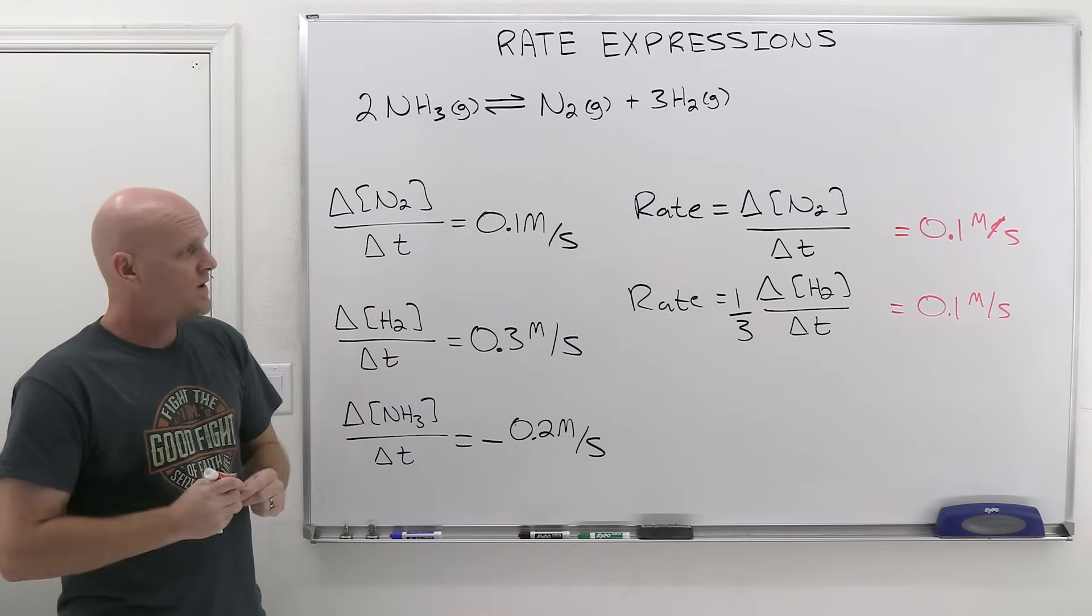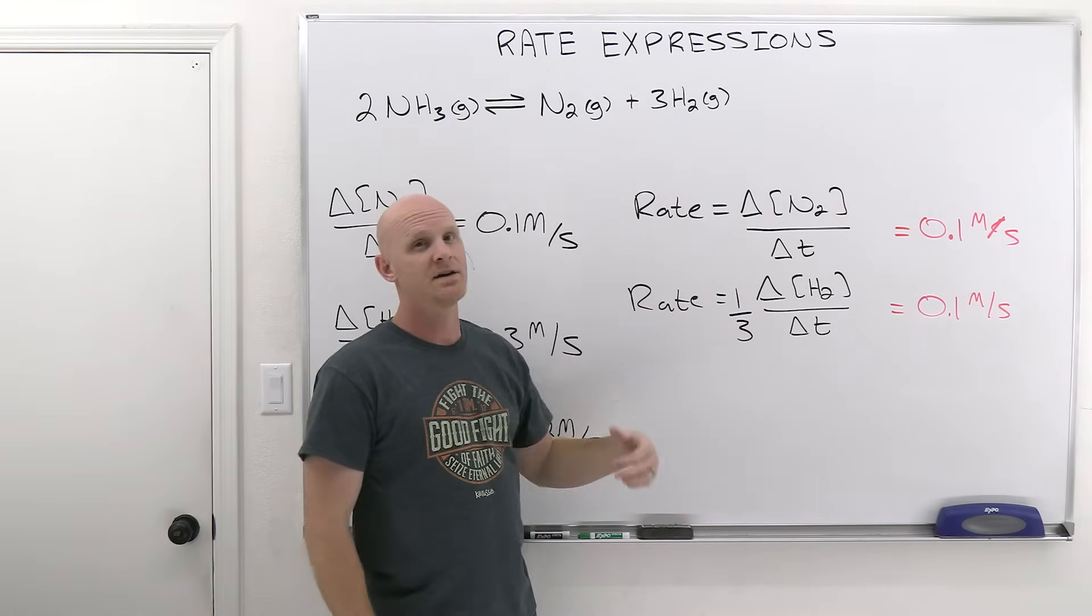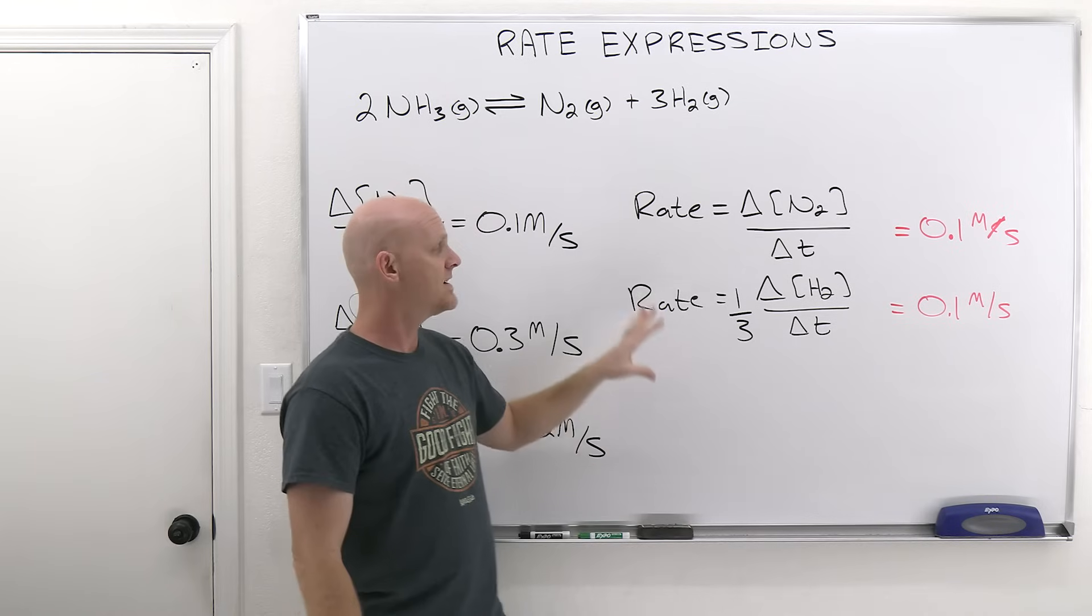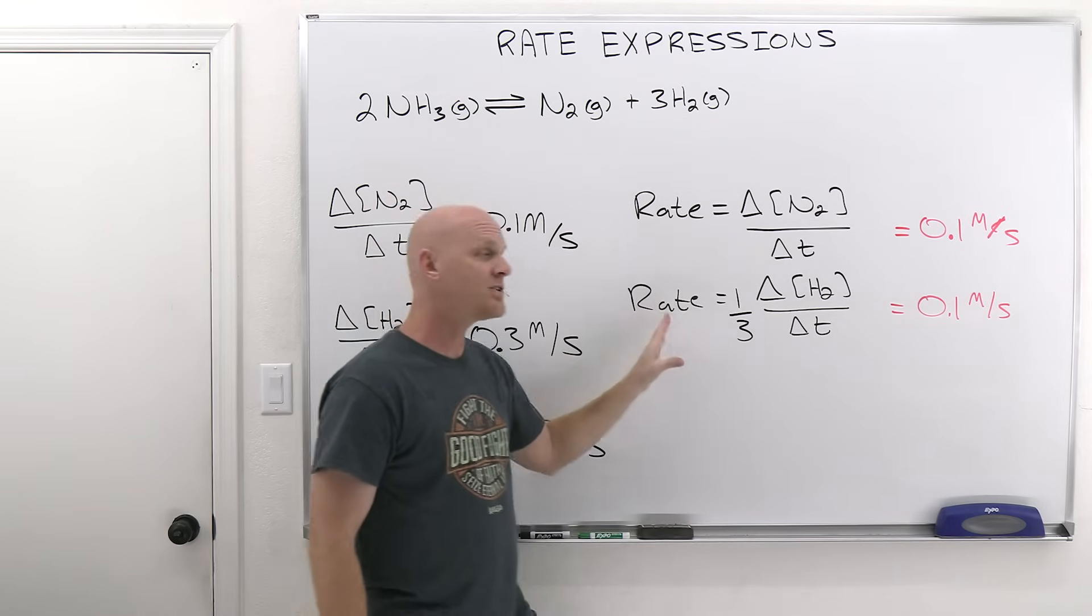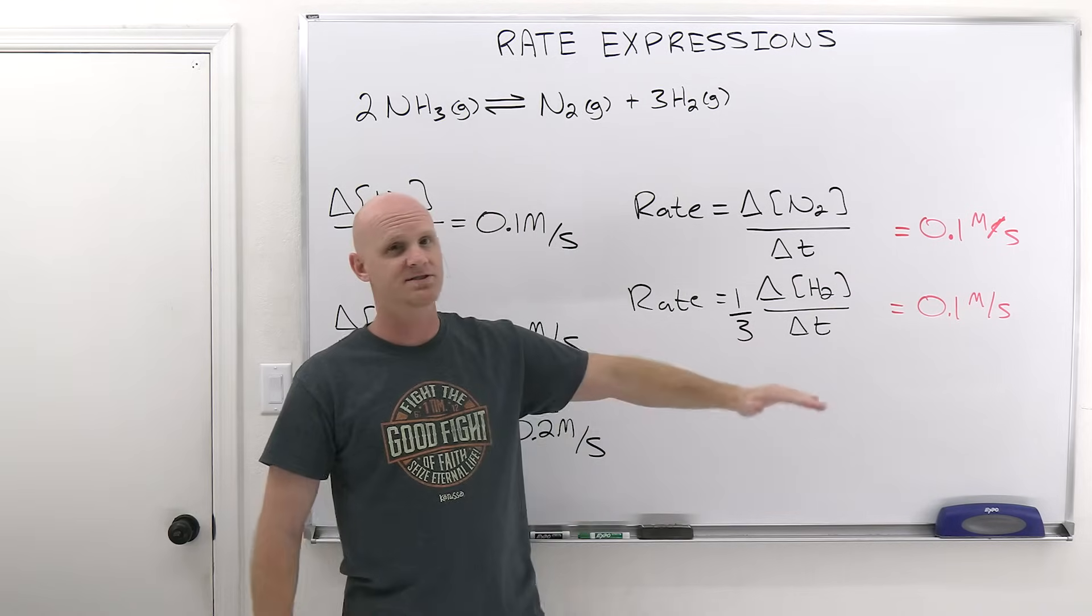And in this case, notice it's going to be one-third times 0.3, and it's still going to come out to 0.1 molar per second. So that's why it's a valid rate expression. These rate expressions take the rate of an individual reactant or product and convert it by some factor into an overall rate of reaction, which is always the same.